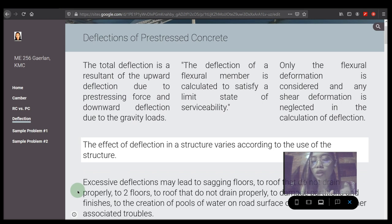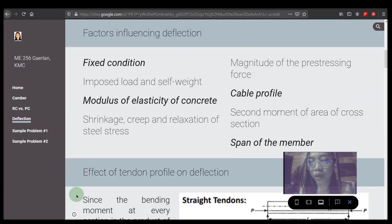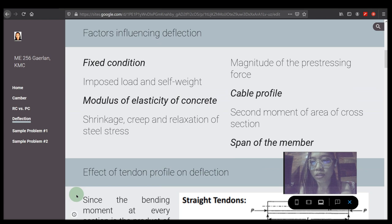We have here factors influencing deflections like fixed condition, imposed load and self-weight, modulus of elasticity of concrete, shrinkage, creep, and relaxation of steel stress, magnitude of the prestressing force, cable profile, second moment of area of cross section, and span of the members.